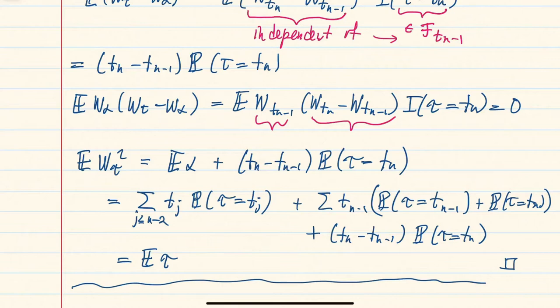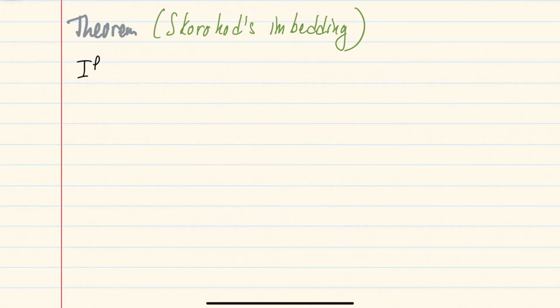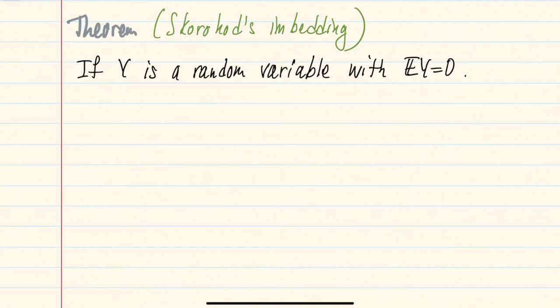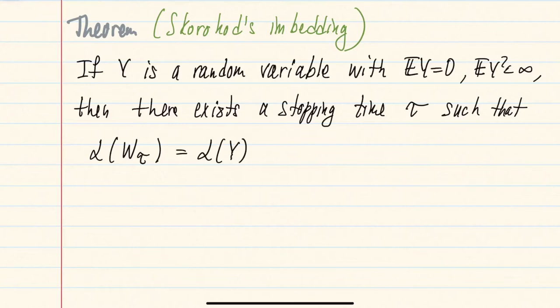Using this result, we now prove the first main result of this section: the Skorokhod Embedding Theorem. It states that if Y is a random variable with expectation zero and finite second moment, then there exists a stopping time τ such that the distribution of the Brownian motion W_τ at that stopping time is the same as the distribution of Y. Moreover, the stopping time we construct will be proper and its expectation will be finite.